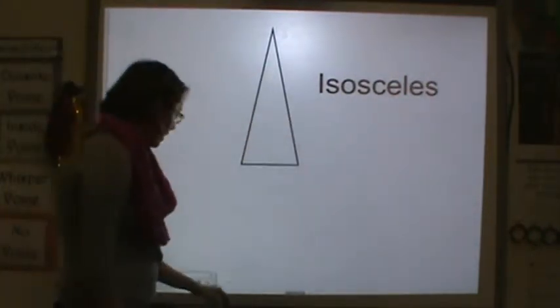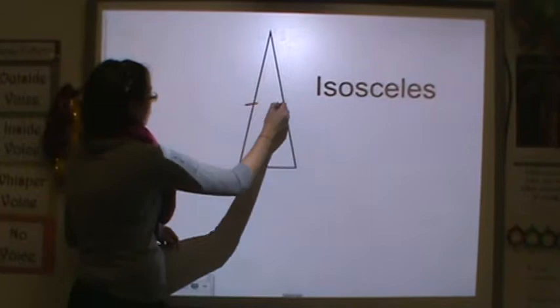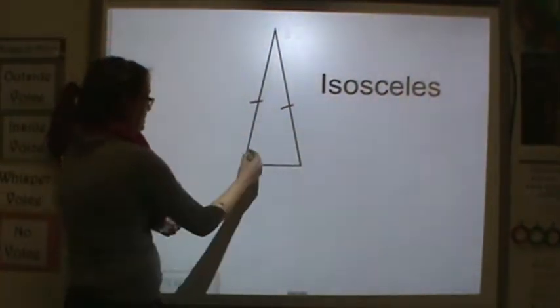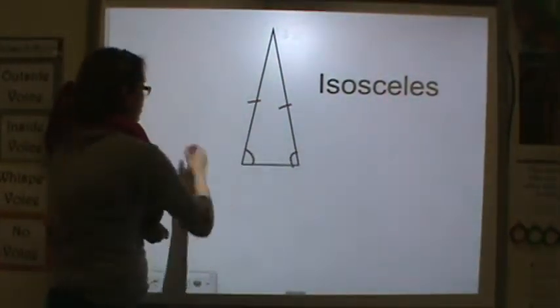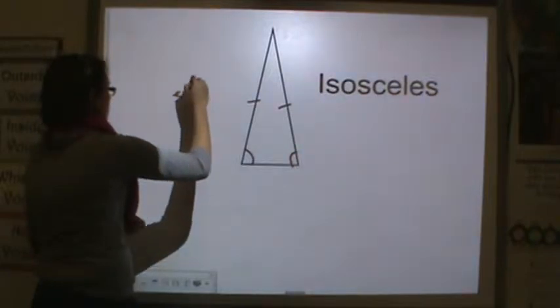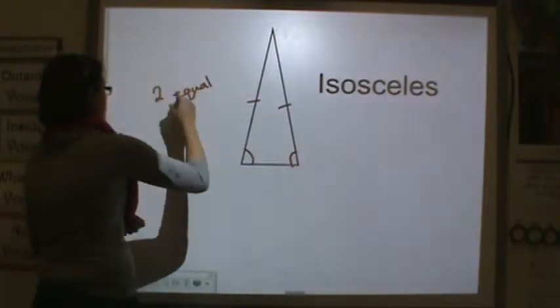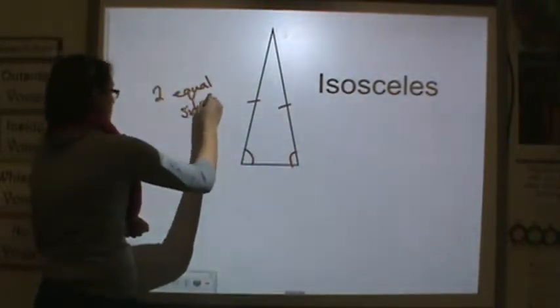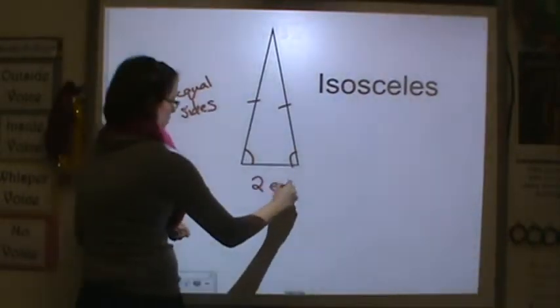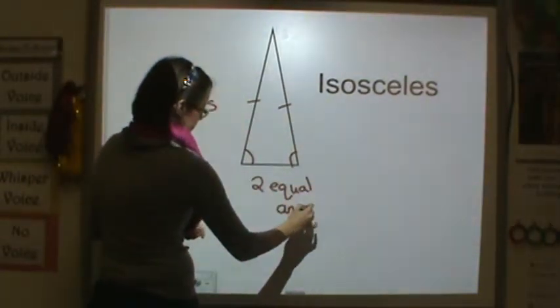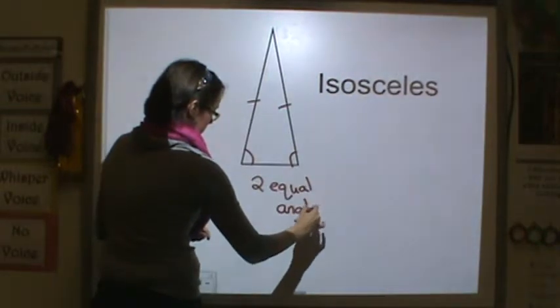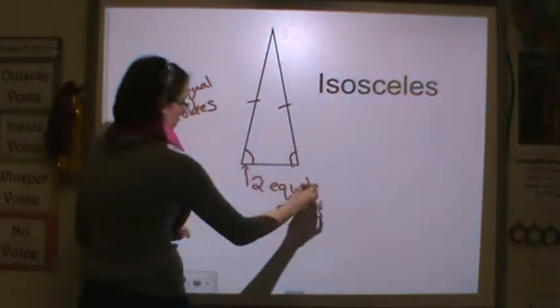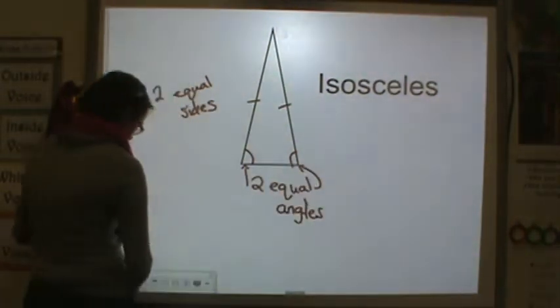This is an isosceles triangle. You can see here you have two equal sides and here your equal angles. So equal sides and two equal angles. Okay, so here's your angle and there's your angle there.